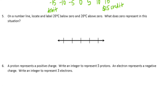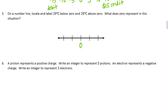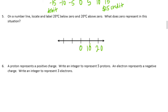Number 5: On a number line, locate and label 20 degrees Celsius below zero and 20 degrees Celsius above zero. What does zero represent? Here's zero; I'll count by tens: 10, 20, negative 10, negative 20. 20 degrees below zero is labeled there, and 20 degrees above zero is positive. Zero would represent zero degrees Celsius.